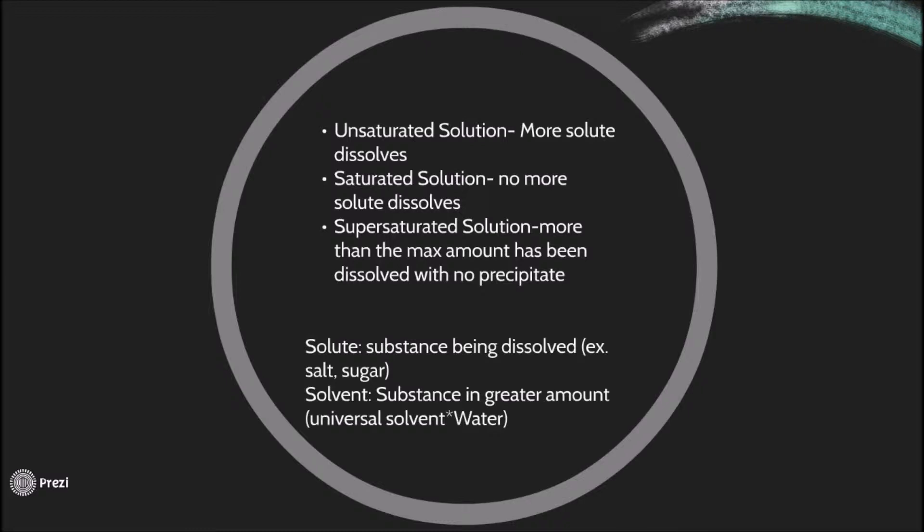Solute substance being dissolved, example salt and sugar. Solvents substance in greater amount of universal solvent water. For example, an unsaturated solution would have more water than it would have of salt. A saturated solution would have just the right amount of salt or sugar needed in the water so that no more can dissolve. In a supersaturated solution, there would be an excess amount of the salt or sugar being used in the water. Therefore, if it was heated and cooled, there would be a precipitate or tiny little crystals that would form.